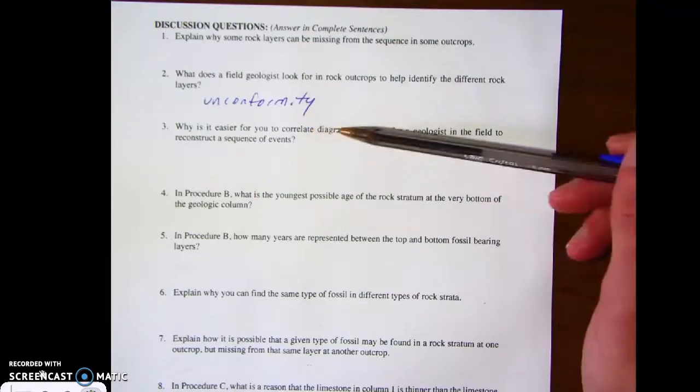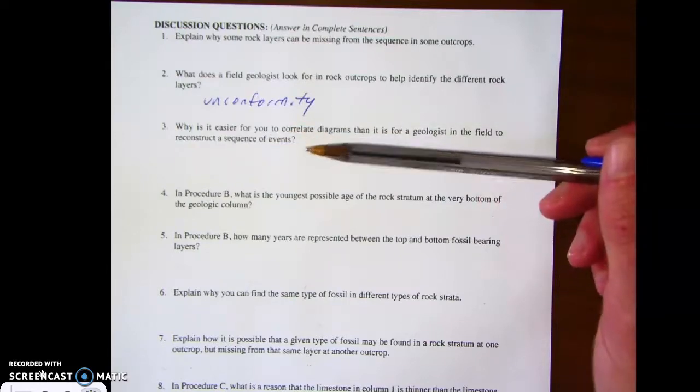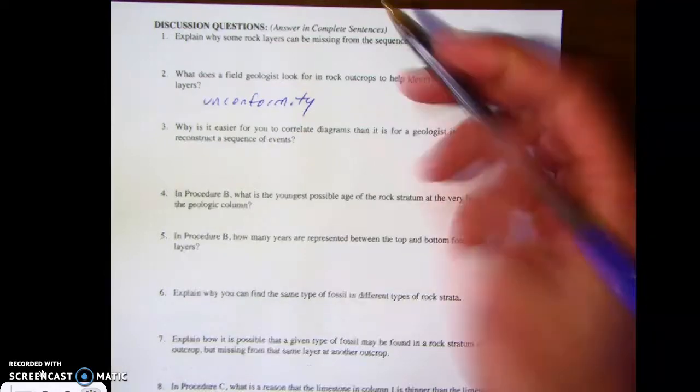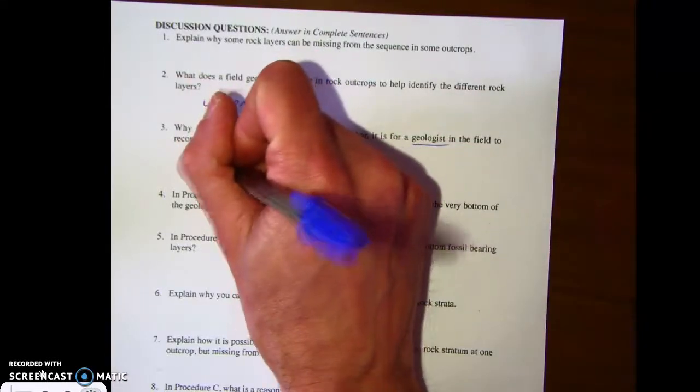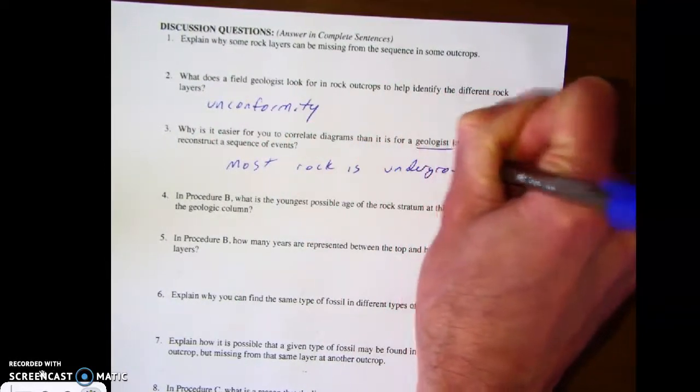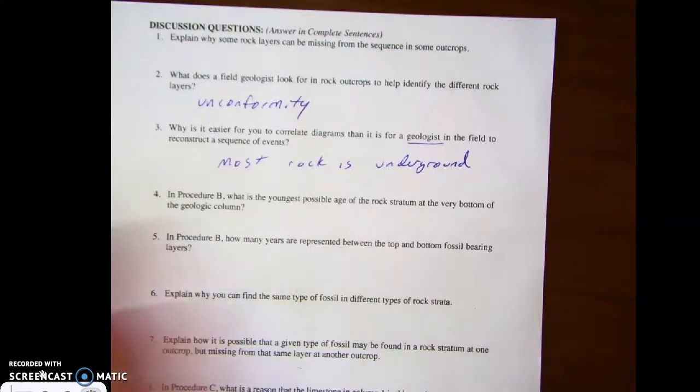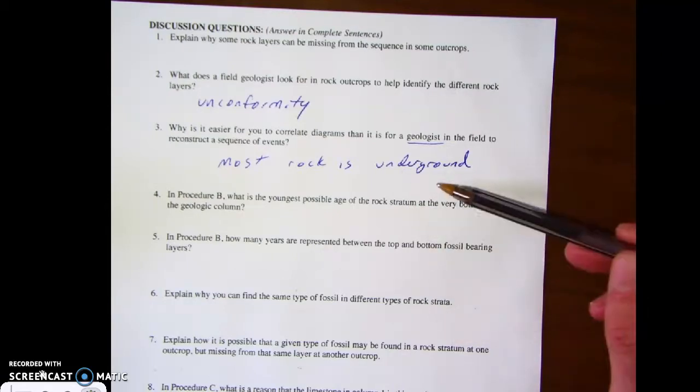For number three, it says why is it easier for you to correlate diagrams than it is for geologists in the field to reconstruct a sequence of events? What we did might have seemed confusing, but for a real geologist, it's actually even a lot harder. One of the reasons is that most of this is underground. Most rock is underground. It might be buried, covered up by grass and trees, or paved over with concrete. It becomes really difficult for geologists to try to figure out what's actually under the ground, because you can't really see into the earth. The only real places we can see are cliff faces or where rock has been blasted.